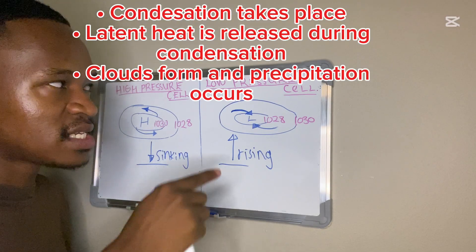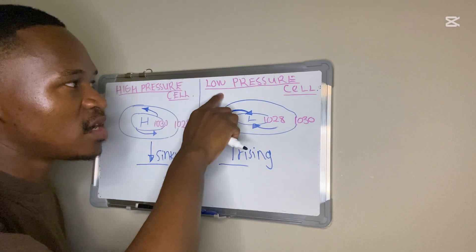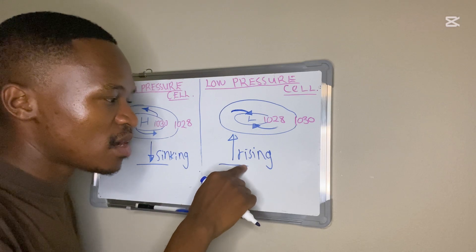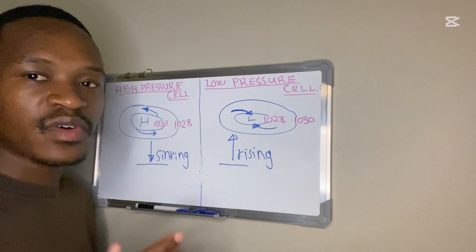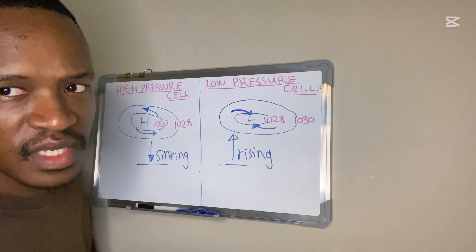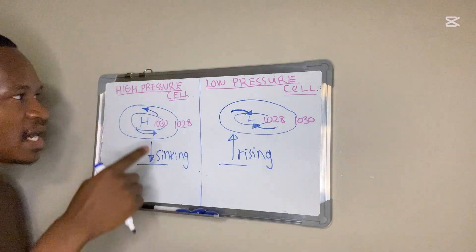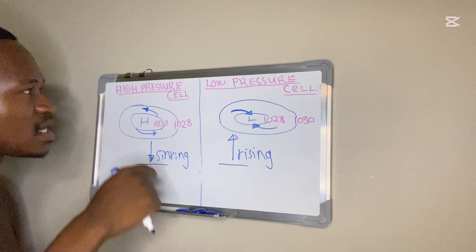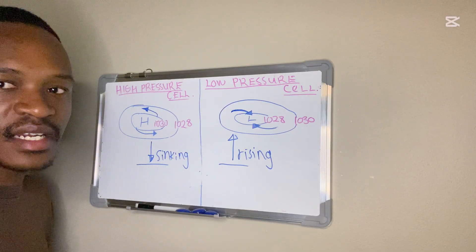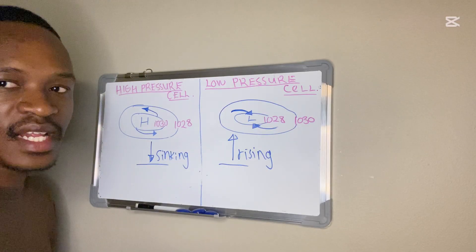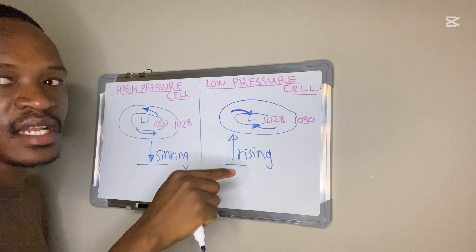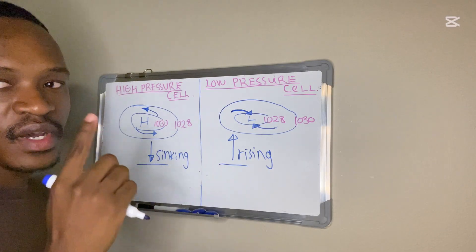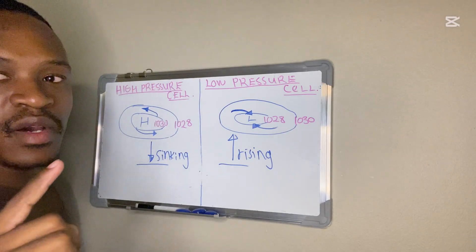Our low pressure cell brings about more precipitation because warm moist air rises, cools, and condenses to form clouds, which bring about precipitation. But for the high pressure cell, the air is sinking, so there is less rainfall and clear skies. When there's a low pressure cell there is more precipitation and more clouds because of the warm air rising.